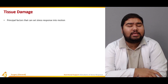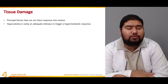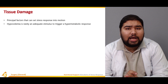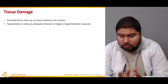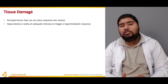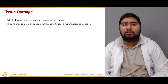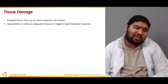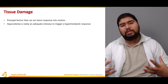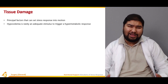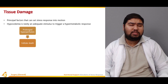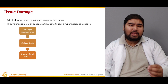Tissue damage is one of the principal factors that can set stress into motion. Hypovolemia in itself is not really an adequate stimulus to trigger a hypermetabolic response. A hypermetabolic response occurs whenever there's an insult or injury to the body — the body tries to compensate by increasing its metabolism. Oxygen consumption increases and carbon dioxide production increases, so the body enters a state of hypermetabolism to produce more energy to fight off the insult.